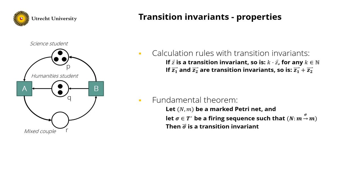To summarize: we have seen that the effect of a transition invariant is 0 on the marking. In other words, if you execute a firing sequence that has the same Parikh vector as a transition invariant, you end up in the same marking as where you started. That property is also the fundamental theorem of transition invariants. Similar to place invariants, there are calculation rules: multiplying a transition invariant with some non-negative constant results in a new transition invariant, as well as the addition of two transition invariants. In modeling, we often apply transition invariants to study the effect of loops in our models. If we cannot find a positive transition invariant — an invariant that assigns a positive value to each transition — then we know that the model is not well-formed and bounded. If we cannot find a firing sequence containing all transitions that brings us back to the initial marking, then we know that the model is not live and bounded.